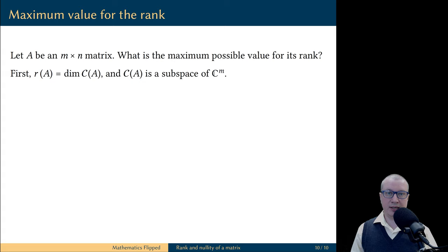On the one hand, the rank of the matrix is the dimension of the column space of A, and column space is a subspace of C^m. We proved in the last video that the dimension of a subspace does not exceed the dimension of the ambient vector space; therefore, the dimension of the column space of A is no more than the dimension of C^m.